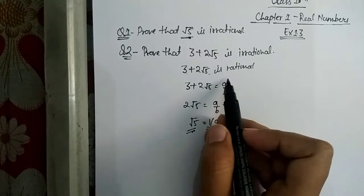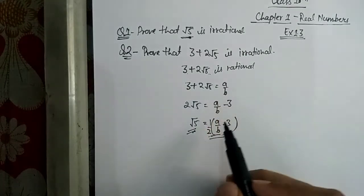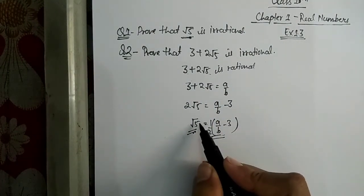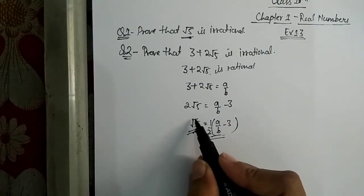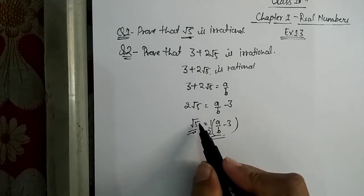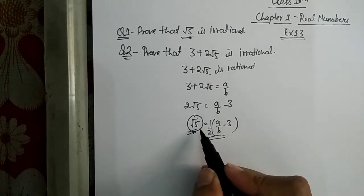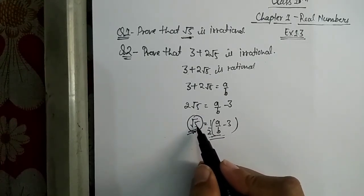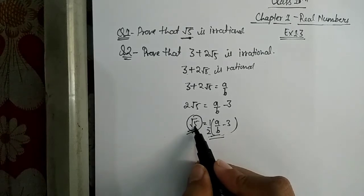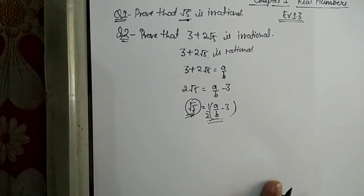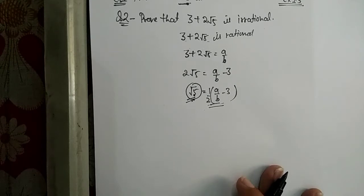Students, in your board exams you cannot write it in this short way. You have to show the full solution. You will also need to show that √5 is irrational. Then you will get your full marks. Let's move on to the next question.